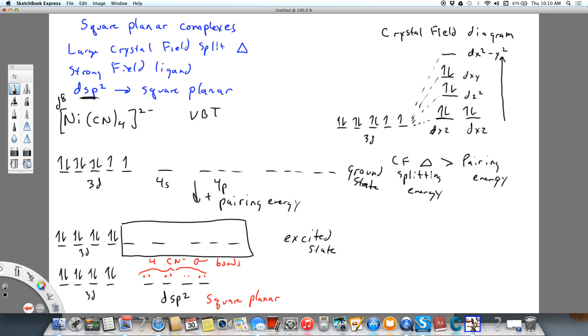And what's important is you can see that we've got matching here. So when I say matching, what I mean is we've got everything paired up. There's no unpaired electrons when we put them into the crystal field diagram, just as there's no unpaired electrons when we demonstrate the hybridization DSP2.